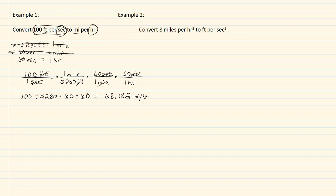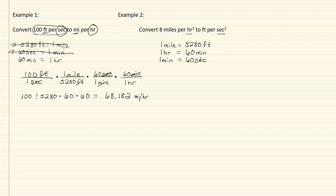Now let's look at example two. We need to convert eight miles per hour squared to feet per second squared. The miles conversion is straightforward: one mile equals five thousand two hundred and eighty feet. For the squared part, we don't have a conversion for that directly, so we use our conversion twice to get them squared — hour times hour gives hour squared, and seconds times seconds gives seconds squared. Starting from one hour: one hour equals sixty minutes, and one minute equals sixty seconds.